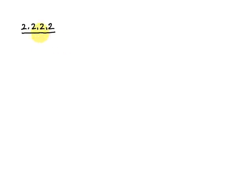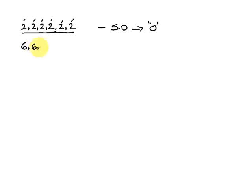Next, we discuss standard deviation. Consider the example where all numbers are 2, 2, 2, 2, 2, 2. Using a cricket analogy: if a batsman scores 2 runs every ball for six balls, there is no variation — the standard deviation is zero. Similarly, if Dhoni scores a six every ball — six, six, six, six, six, six — the standard deviation is also zero, because all values are equal.